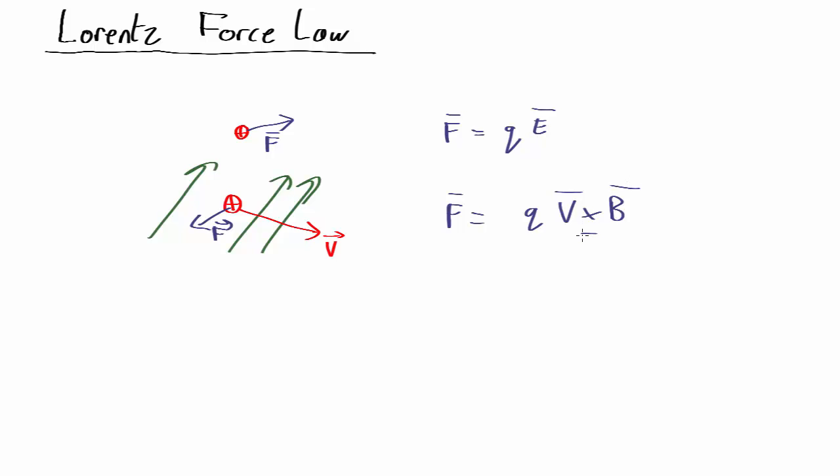So this is the cross product, as before, which means it's at right angles to both velocity and magnetic field. So did I draw this the right way round? Let's see. So we've got v in this direction and magnetic field upwards.